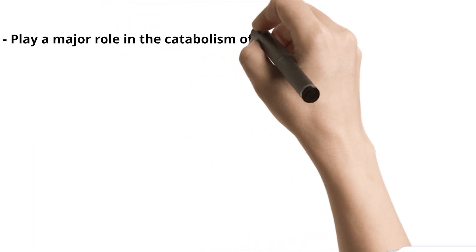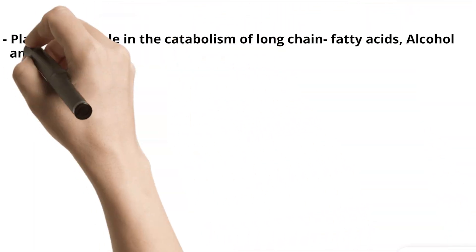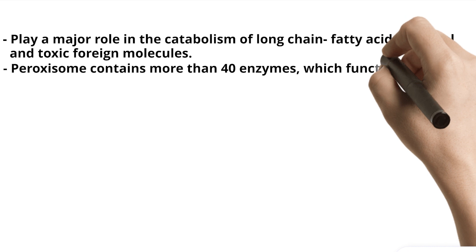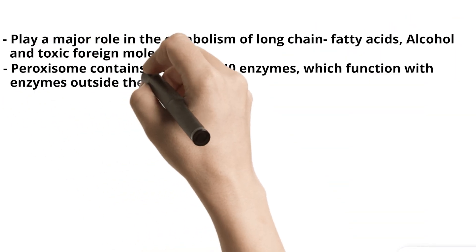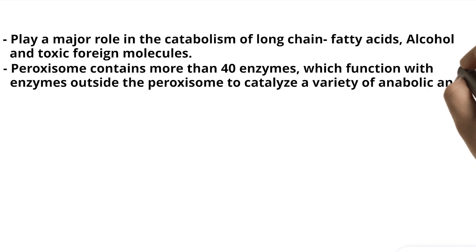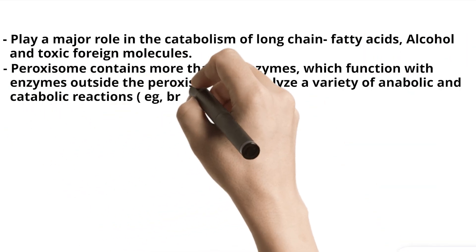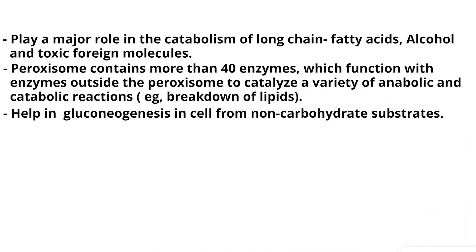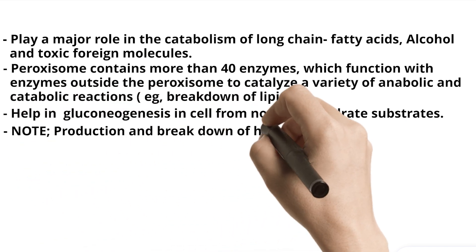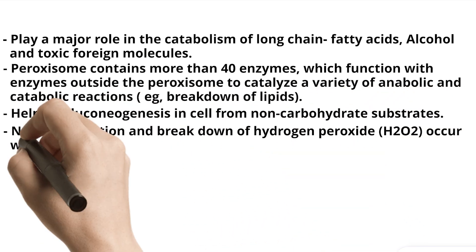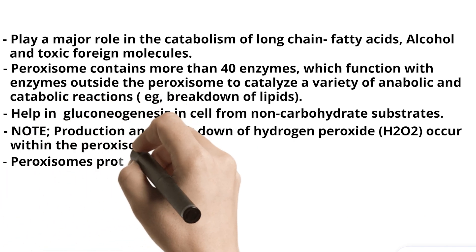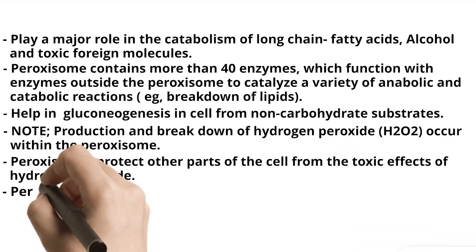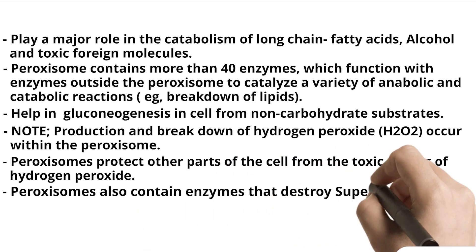Peroxisomes play a major role in the catabolism of long-chain fatty acids, alcohol, and toxic foreign molecules. Peroxisomes contain more than 40 enzymes, which function with enzymes outside the peroxisome to catalyze a variety of anabolic and catabolic reactions, for example breakdown of lipids. They help in gluconeogenesis in the cell from non-carbohydrate substrates. Note: production and breakdown of hydrogen peroxide (H₂O₂) occur within the peroxisome. Peroxisomes protect other parts of the cell from the toxic effects of hydrogen peroxide.